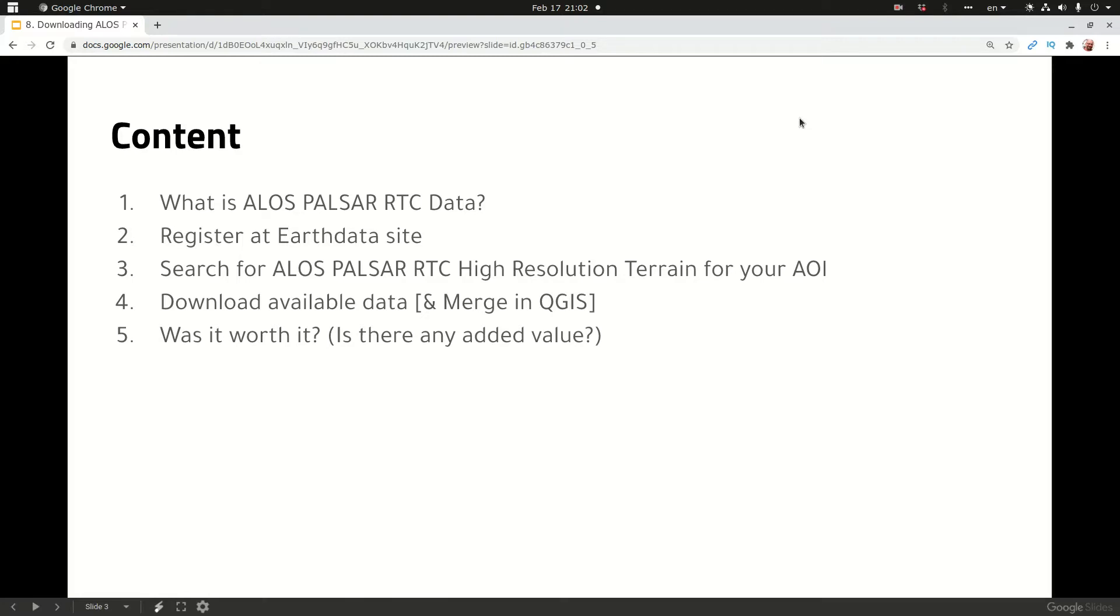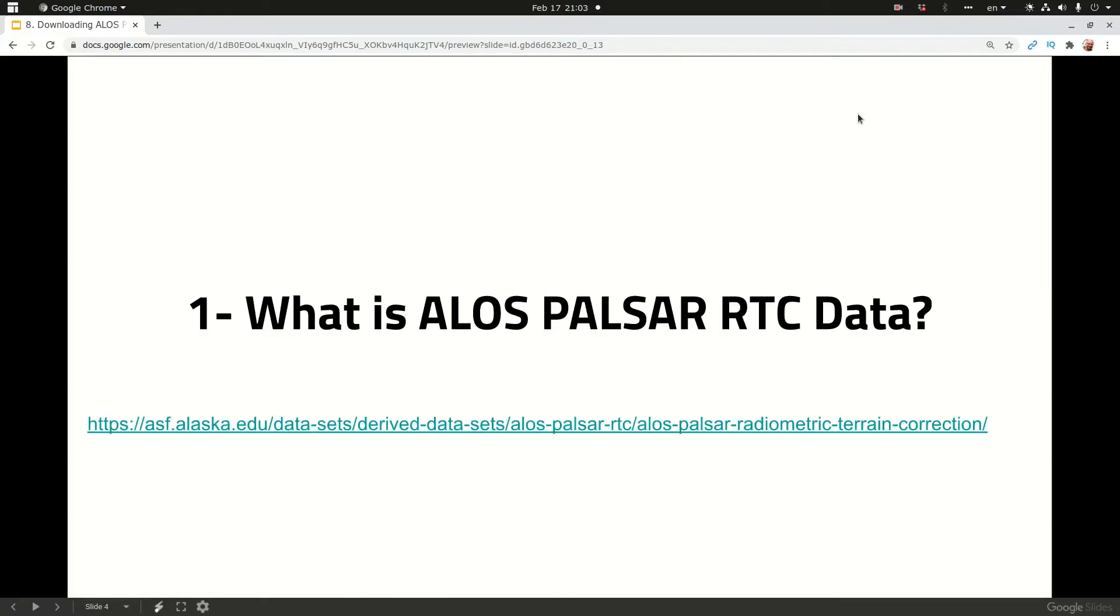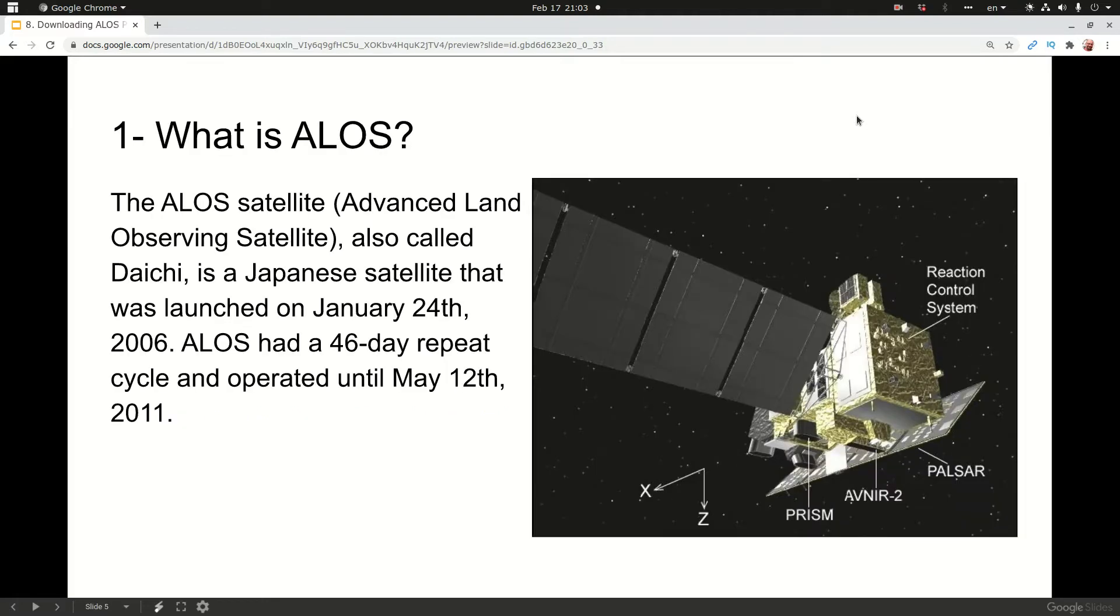The first question is what is ALOS PALSAR RTC data. ALOS is the abbreviation of Advanced Land Observing Satellite. It's a Japanese satellite also called Daichi, that was launched on January 24th, 2006. ALOS had a 46-day repeat cycle and operated until May 12th, 2011.